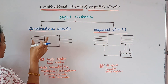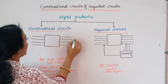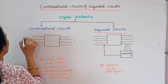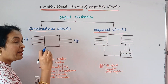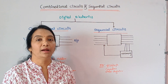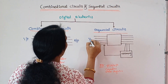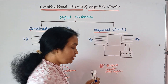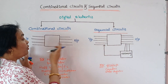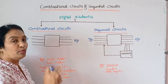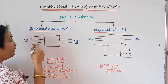Suppose you are using a block diagram here. This is the input, and this is the output. The output depends only on the input — that is the key property of a combinational circuit.